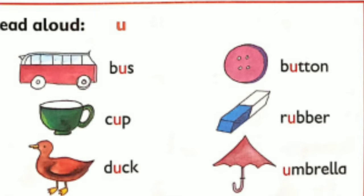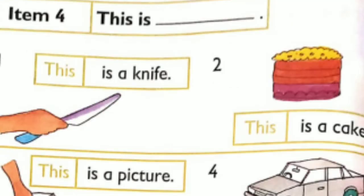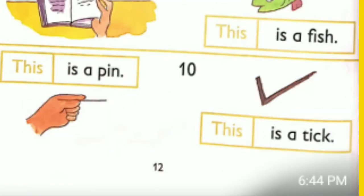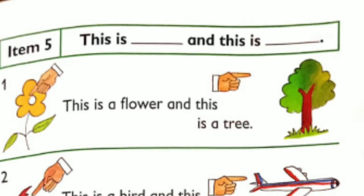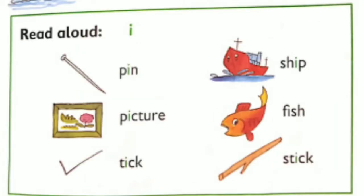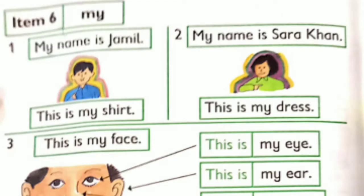Item 4 — This is. This is a knife. This is a car. This is a picture. This is a car. This is a stone. This is a stick. This is a page. This is a fish. This is a pin. This is a flower and this is a tree. This is a bird and this is an aeroplane. This is a ship and this is a shop. Read aloud: pin, picture, take, shape, fish, stick.